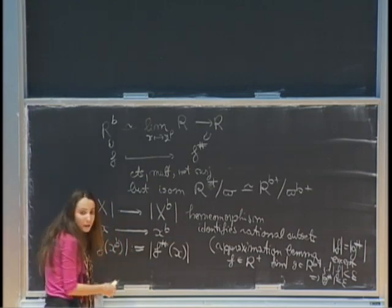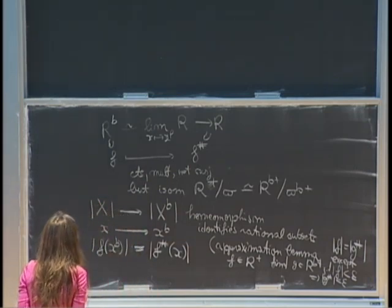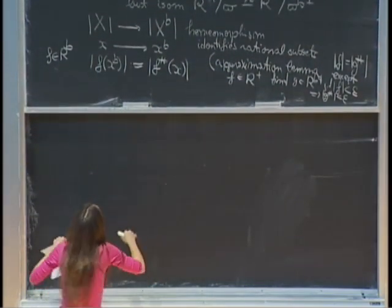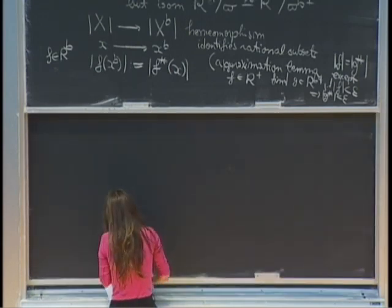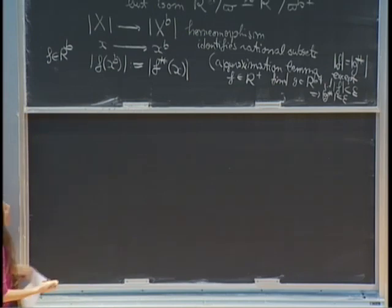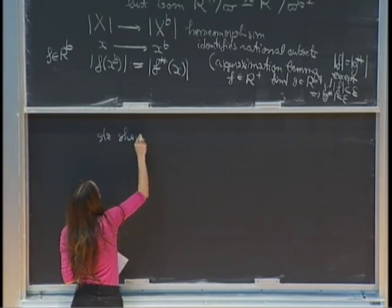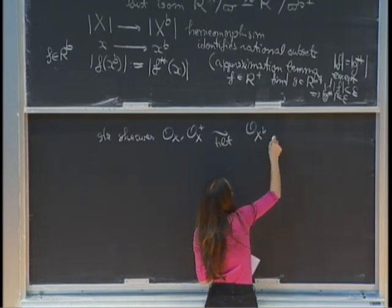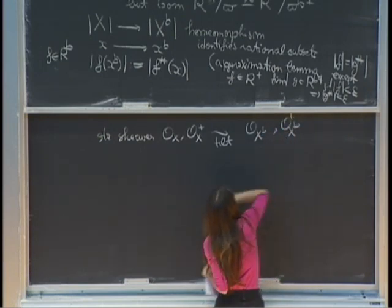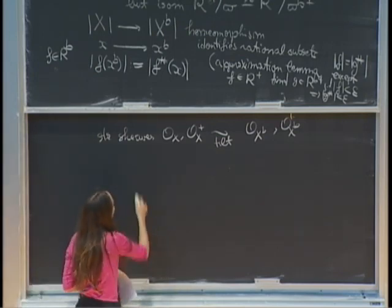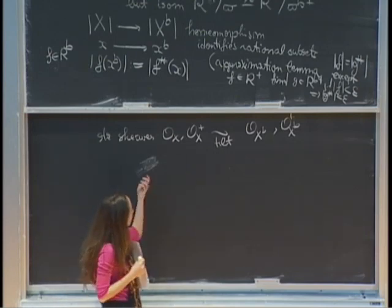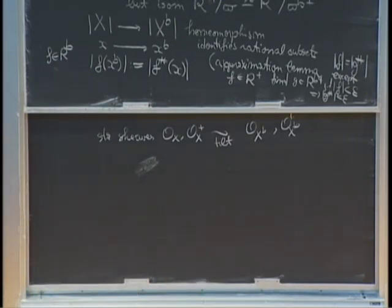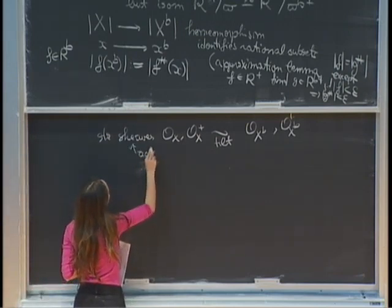We have a homeomorphism on topological spaces. The structure sheaves O_X and O_X+ are related by tilting with the structure sheaves of x-flat, O_{x-flat} and O_{x-flat}+. On an affinoid perfectoid, O_X(U) and O_X+(U) tilt to the corresponding things for x-flat. Moreover, these are actually sheaves, not just pre-sheaves, in the case of perfectoid spaces.